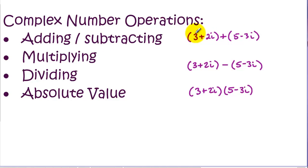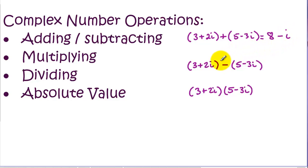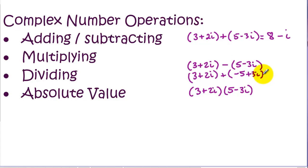You can think of addition and subtraction as combining like terms. We combine the real parts together and the imaginary parts together. So for example, combining 3 plus 5 gives 8 for the real parts, and 2i plus negative 3i gives negative i for the imaginary parts. For subtraction, we distribute the minus sign just like with polynomials. So 3 minus negative 5 gives negative 2, and 2i plus 3i gives 6i. Adding and subtracting is straightforward.